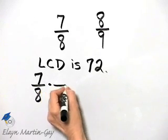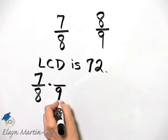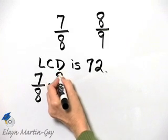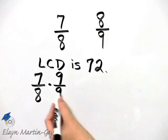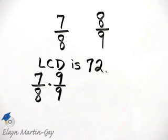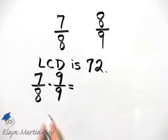We ask ourselves 8 times what number gives a product of 72, and that number is 9. And then whatever number we use here in the denominator, I must multiply by the same number in the numerator because then, remember, I'm multiplying by 1. And multiplying by 1 doesn't change the value of this fraction.